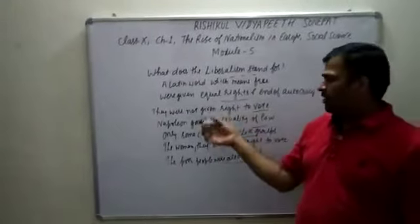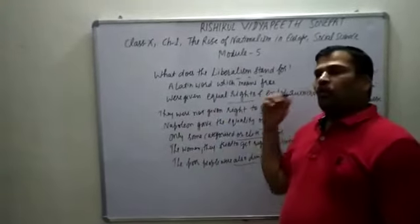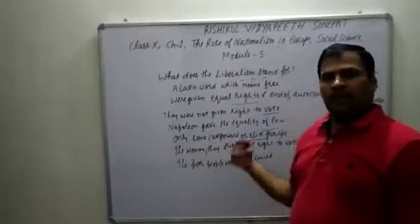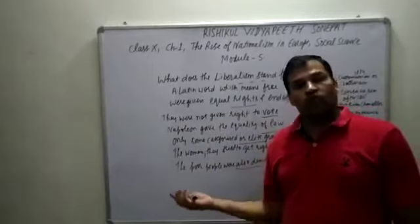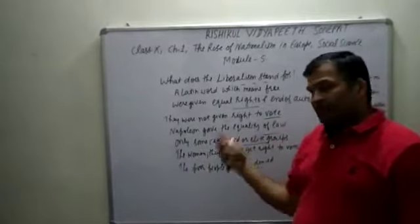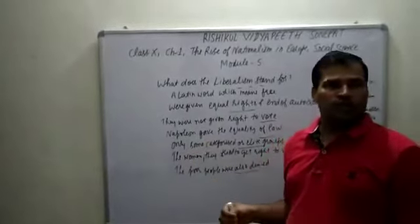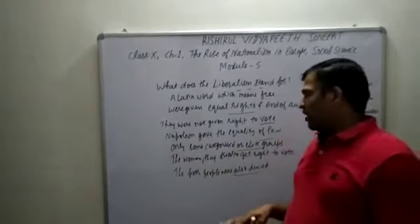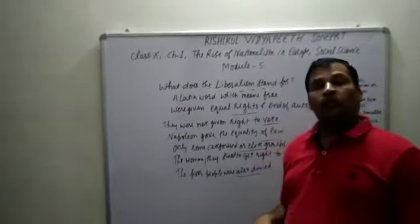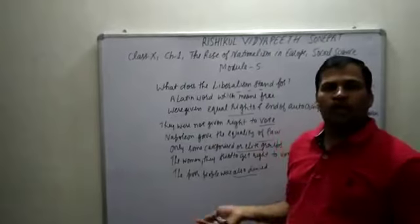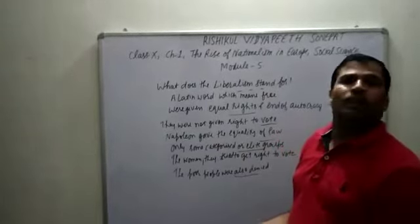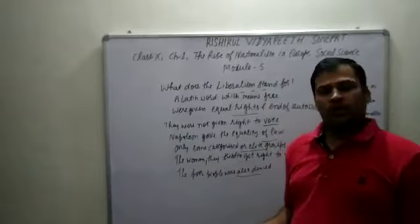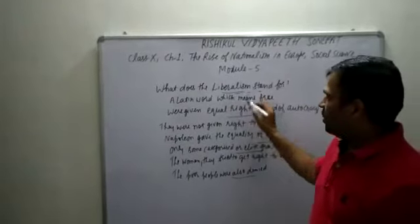The poor people were also denied this right. So equality of rights was there in law, and people were equally considered under it. But when it came to society, discrimination was still present. People thought they could cast their vote like a weapon, but that was not possible. Such was the nature of liberalism at that time.